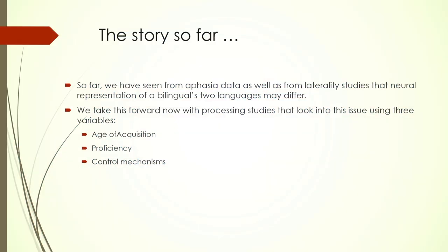So far we have looked at data from aphasia and epileptic patients, and the data has told us that there is a possibility that L1, the first language, and the second language of a person might be represented differently in the human brain. Various kinds of data have been discussed in the background, and today we will move forward to look at the current state of affairs and what we know today.